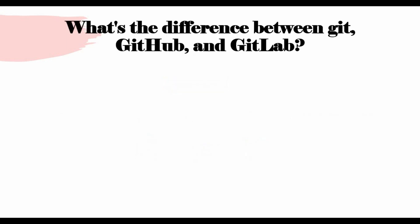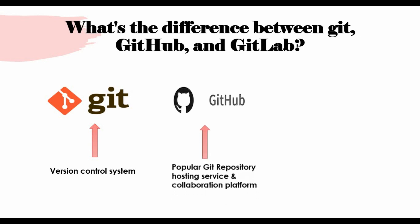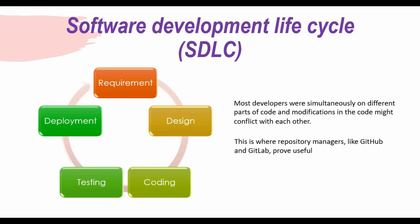To recap what we discussed: in simple words, Git is a version control system or software that is installed locally on your machine, whereas GitHub is a popular Git repository hosting service and collaboration platform, and GitLab is a repository hosting service similar to GitHub but with more CI/CD and DevOps features.